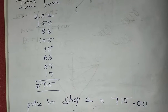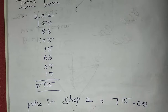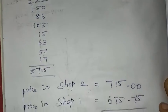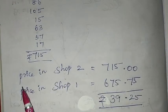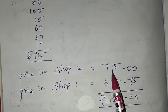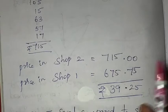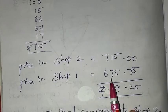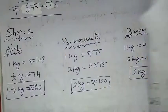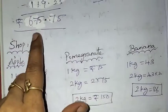Shop 2 total is Rs. 715 with no discount — this is the original amount. Shop 1 discounted price is Rs. 795 minus Rs. 119.25 = Rs. 675.75.